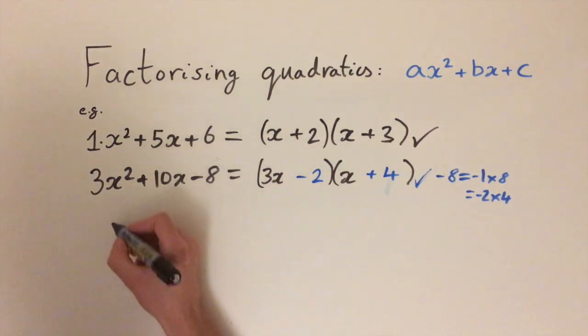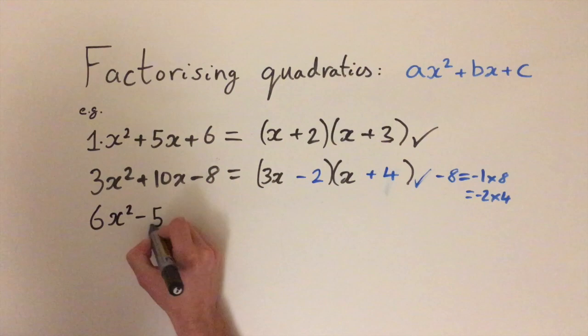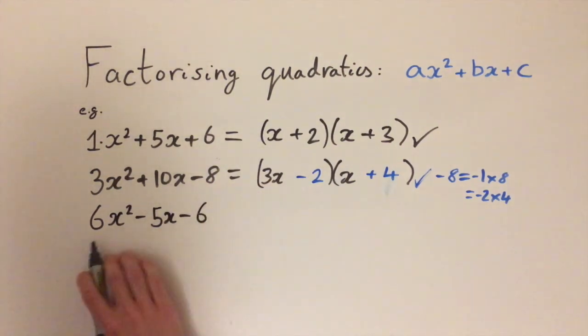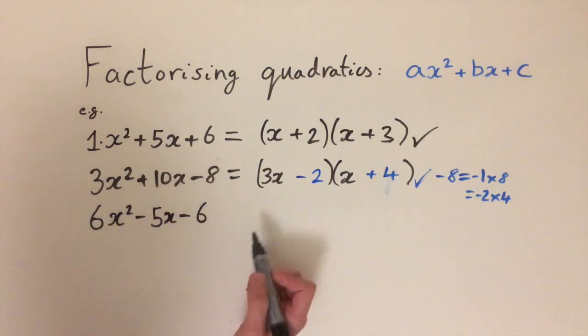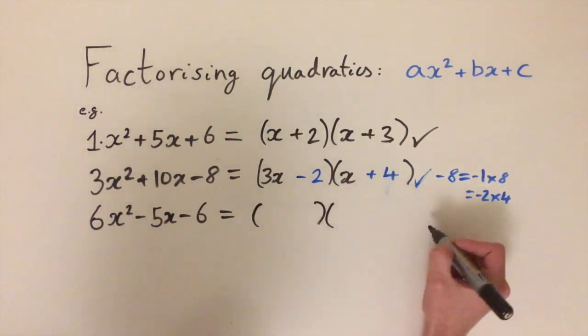So let's do one final example. This is going to be the hardest one. We'll do 6x squared minus 5x minus 6. So lots of minuses, lots of composite numbers. We need to try and factorize this as the product of two linear factors.